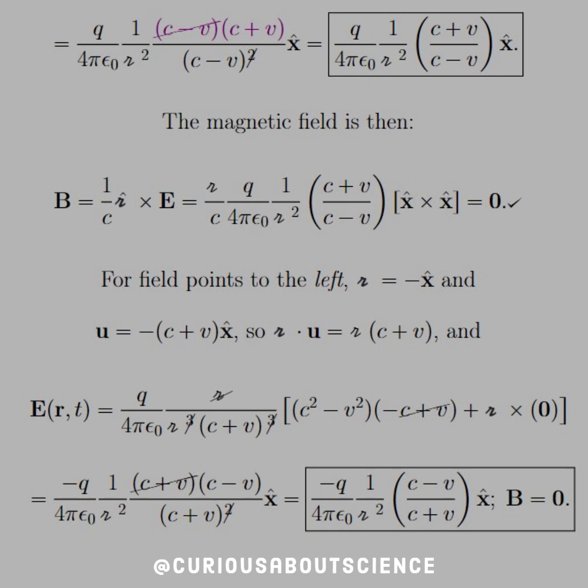Now, for fields to the points left, R-hat would now point in the negative x-hat direction, and so we have to put a minus sign on everything that we did before. And if that's the case, what we're going to see is that the difference of squares cancels in the opposite direction,